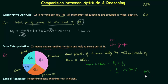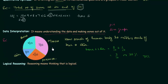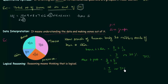So 100 minus 30 is 70 percent — 70 percent of the human body is not made of skin or bone. We can directly calculate this by finding muscles plus proteins: 3 by 10 plus 4 by 10, which equals 7 by 10, or 70 percent. So we can directly find out the part of the body which is made of muscles and proteins.